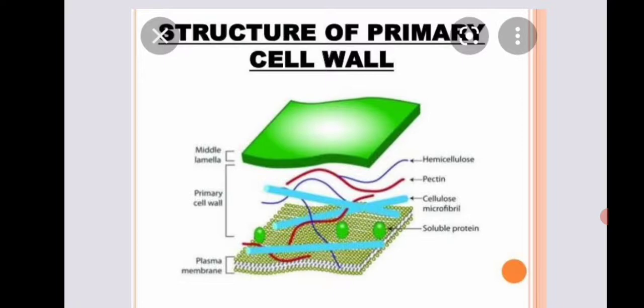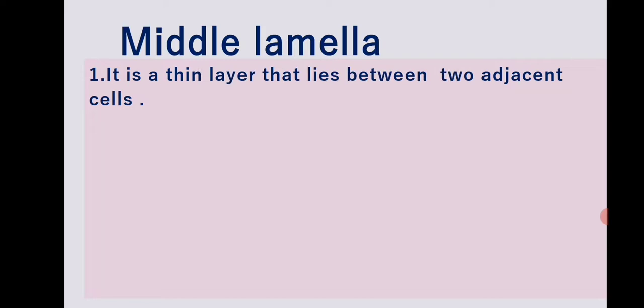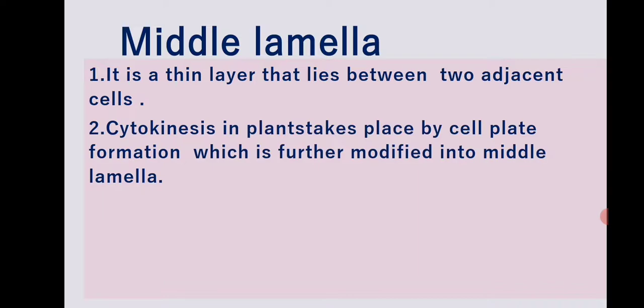I will explain the three layers of the cell wall in a plant. The middle lamella is a thin layer that lies between two adjacent cells. Cytokinesis in plants takes place by cell plate formation, which is further modified into the middle lamella. Cytokinesis refers to cell division.